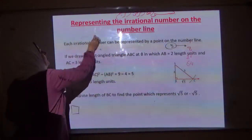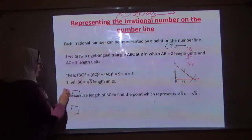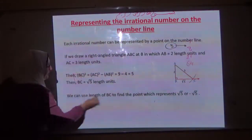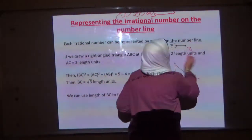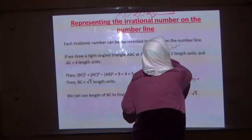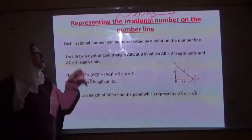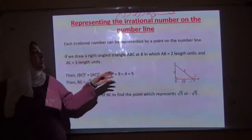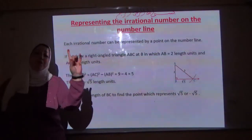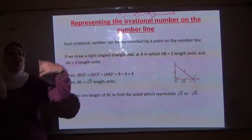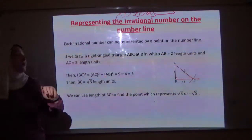Now, representing the irrational number on the number line. Each irrational number can be represented by a point on a number line — just one point. For any rational or irrational number, one point represents it.